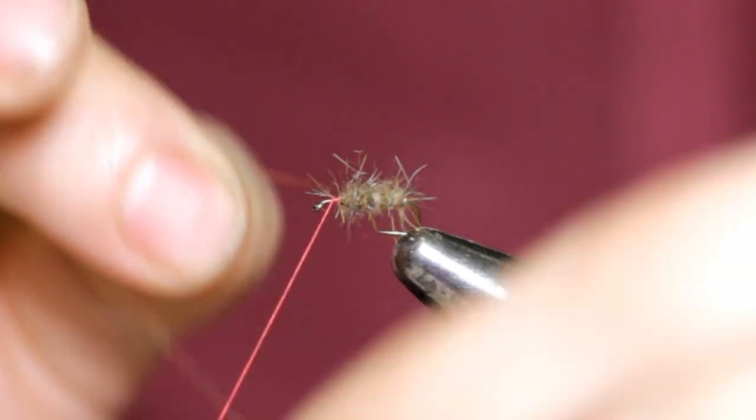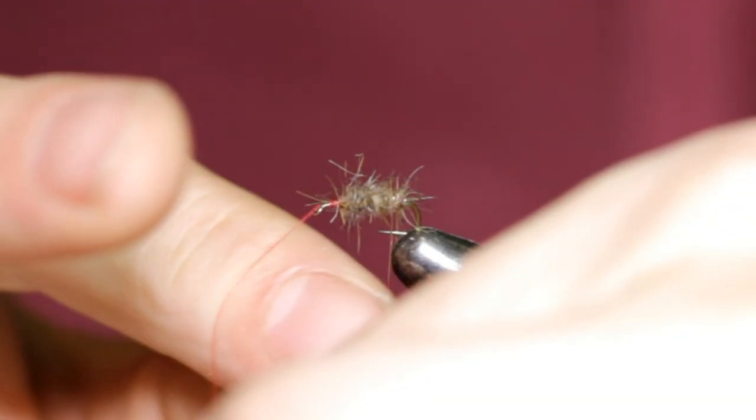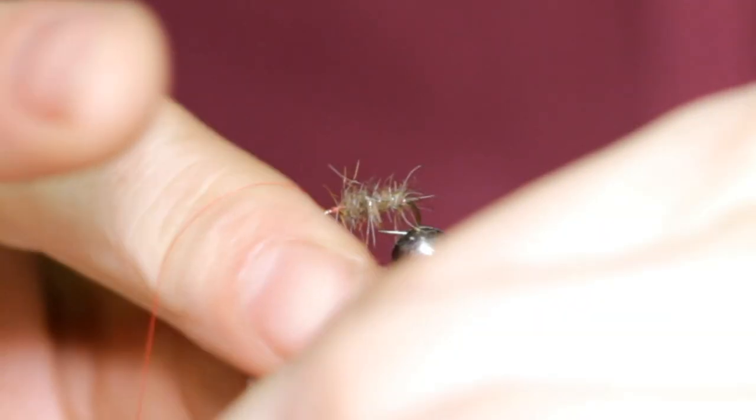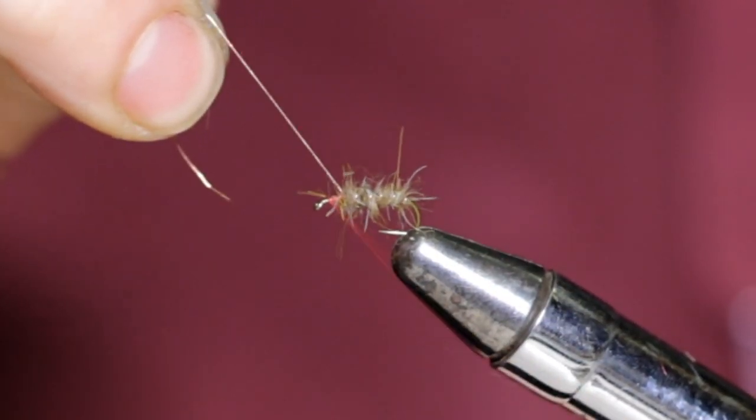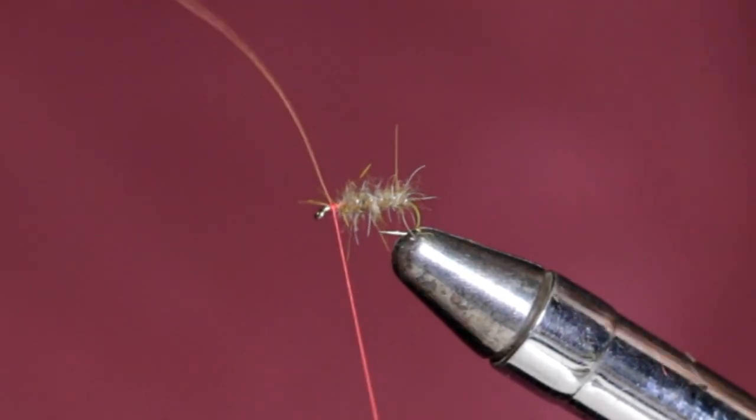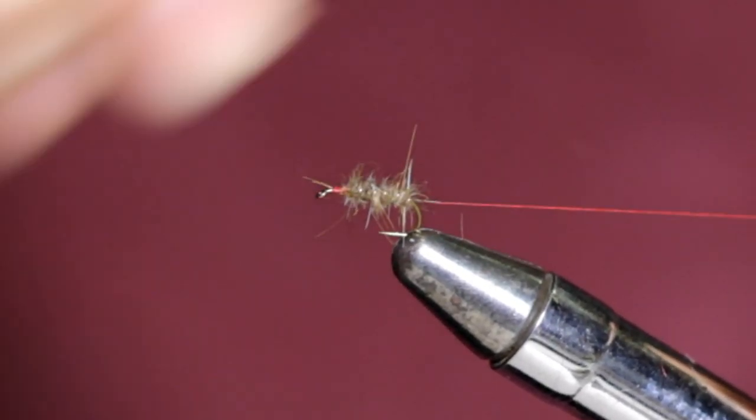Now grab the wire and wrap forward. I'm just going to wrap under and towards me, four or five wraps to secure the dubbing. And this will also add a bit of shine to the pattern. Just bind this down, break or snip your wire off.